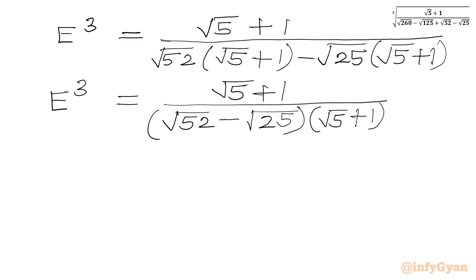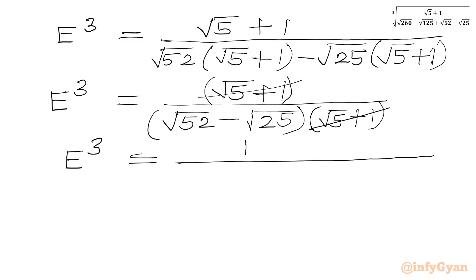So we can write E cubed equal to square root 5 plus 1 over the common factor square root 5 plus 1. This simplifies to E cubed equal to 1 over square root 52 minus square root 25.